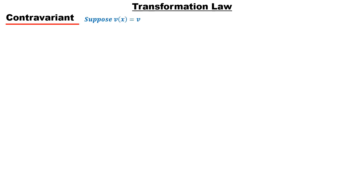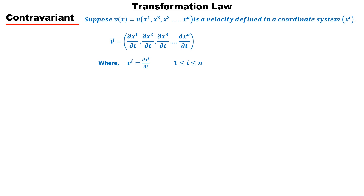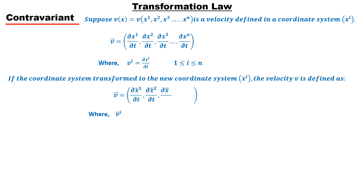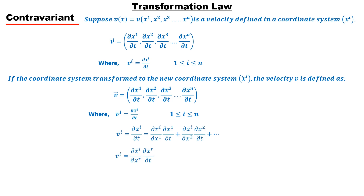Now let's talk about the transformation of contravariant tensor. Suppose v is the velocity in a coordinate system x-super-i, whose components are represented by v-super-i. The index i is written in the superscript of the velocity because velocity is a contravariant tensor, in which indices are written in the superscript of components. If the coordinate system transforms to x-bar-super-i, the velocity component can be represented by v-bar-super-i. Expanding v-bar-super-i through the chain rule and using Einstein summation convention, ∂x-super-r / ∂t equals v-super-r, which is the component of velocity in the x-super-i coordinate system.